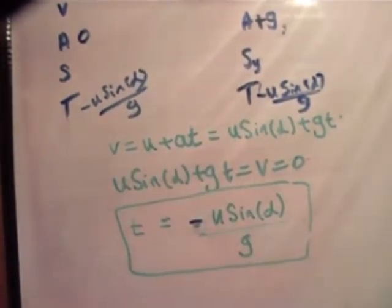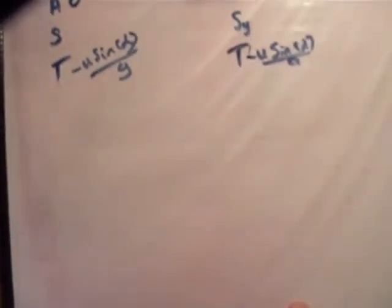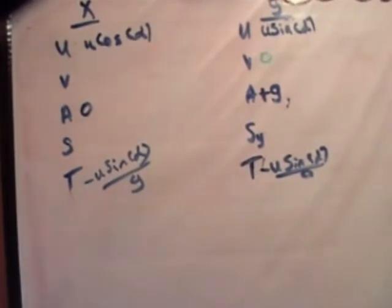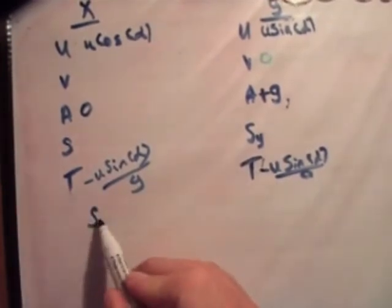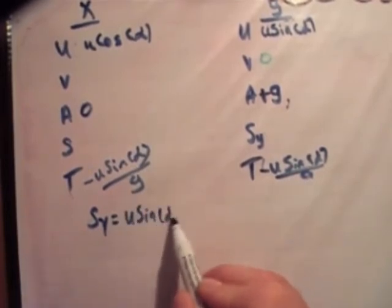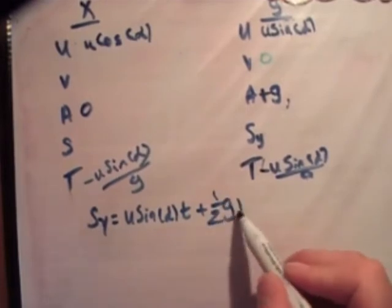So, it's time to just carry on. We're trying, of course, to find the maximum height, or s sub y. So, what we do is, s is equal to ut plus one half at squared. So, s sub y is equal to ut, which is u sine alpha t plus one half g t squared. And we know what t is already.